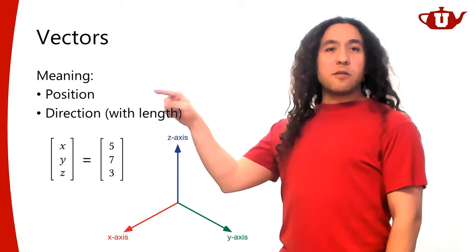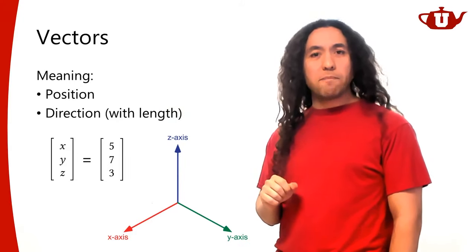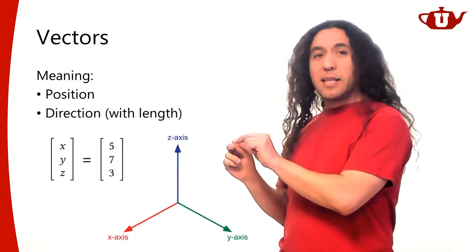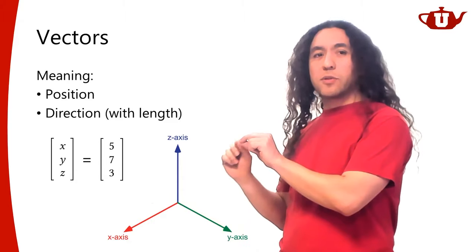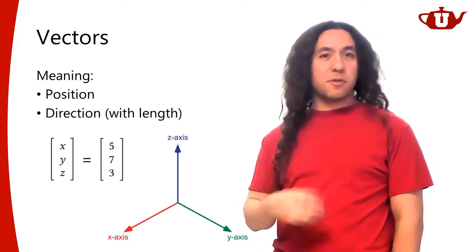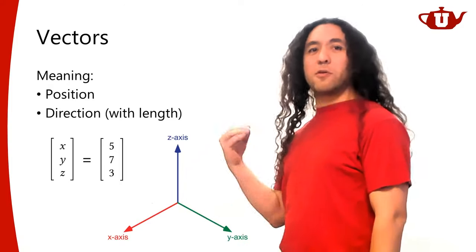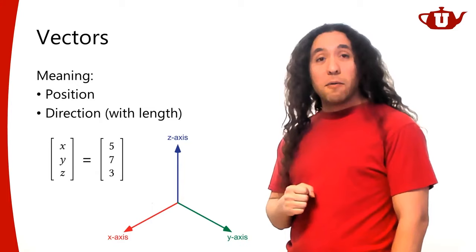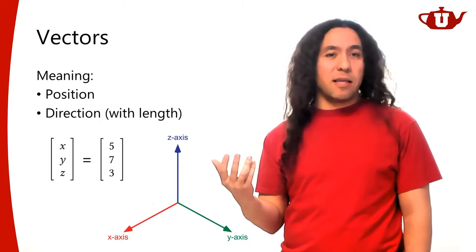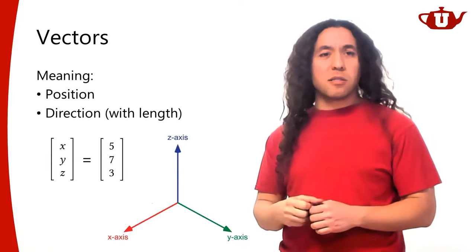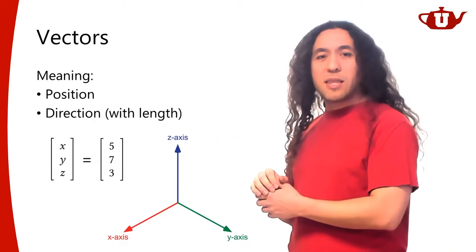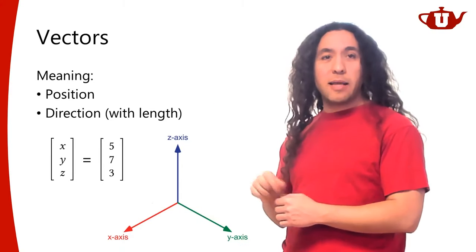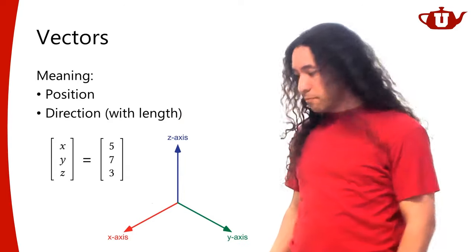Going back to the question of position or direction: if a vector means a position, it also means the direction from the origin to that position. That's why in computer graphics we typically use a single type to represent a vector, because they are in some ways interchangeable. A position can be thought of as a direction from the origin of the coordinate frame.